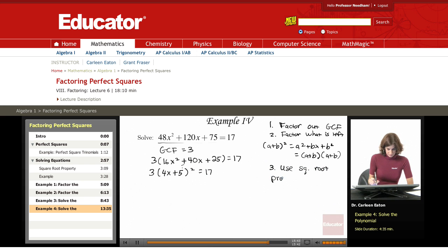which says that if x squared equals n, then x equals plus or minus the square root of n. Okay, so before I do that, I'm going to divide both sides by 3.